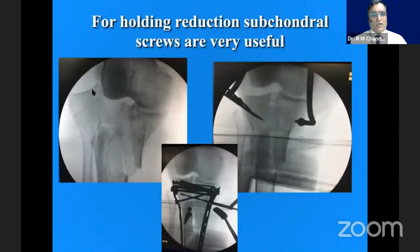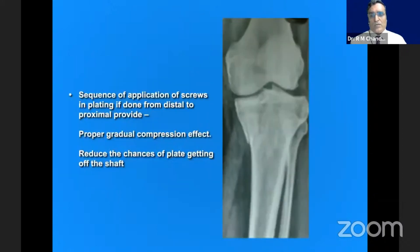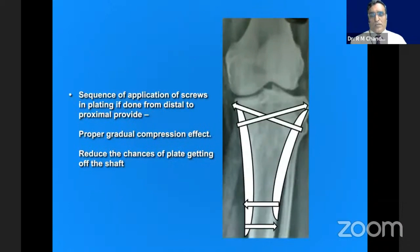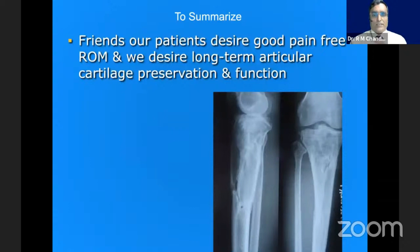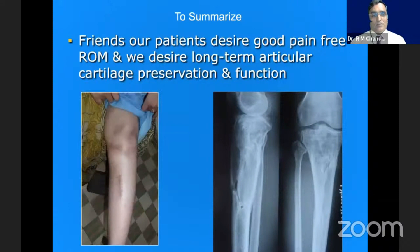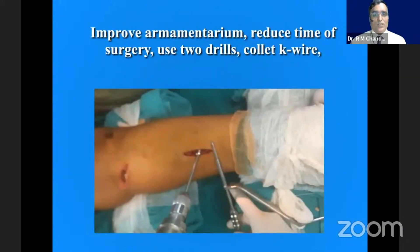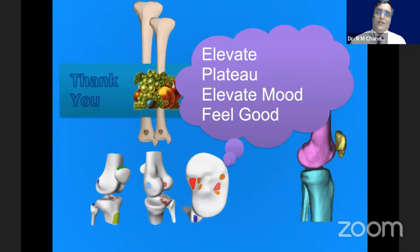When the articular surface is shattered, multiple subchondral screws really give good holding of the articular surface. This is the sequence of screw application in a bicondylar fracture. Once fixation is achieved, test the full range of movement. Our patients desire good range of motion, pain-free function. Even after metal removal, our bones should survive the whole insult of injury and surgical exposure — that is what makes a tibial condyle result truly good. In a nutshell: improve your armamentarium, reduce operating time, possibly use two drills and multiple chucks, use a collet to hold K-wires for rapid placement, and elevate the plateau — which really elevates the mood of the whole theater.